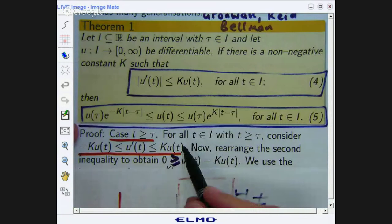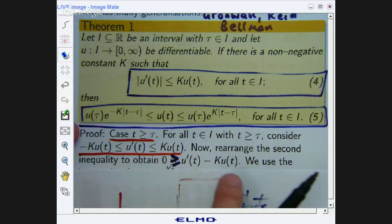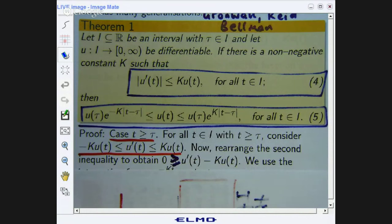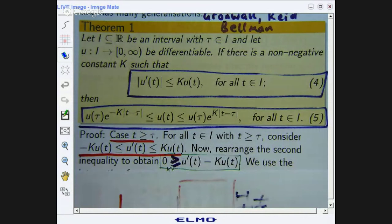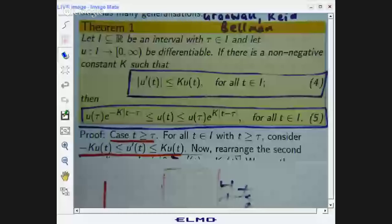Now, if we start with this part and I rearrange, so I bring the Ku(t) to the other side, I get this kind of inequality: u'(t) - Ku(t) ≤ 0. Now, this kind of inequality looks a little bit like a first order linear differential equation except I've got an inequality rather than an equality. So if you think back to a first course in differential equations or a second course in calculus, how do you solve first order linear ODEs? You use an integrating factor. And we're going to do exactly the same thing here. The fact that it has an inequality doesn't make a difference.